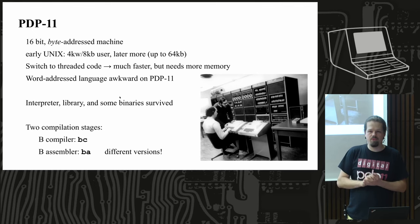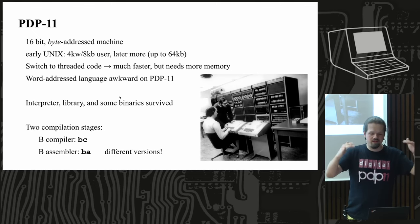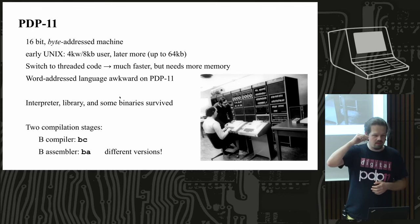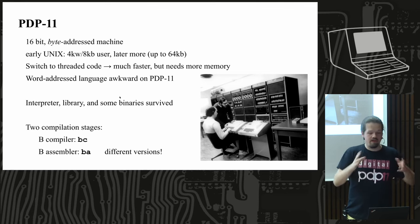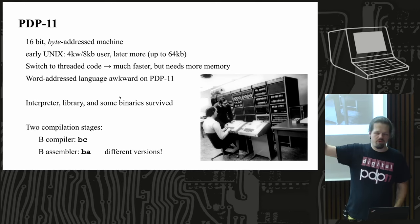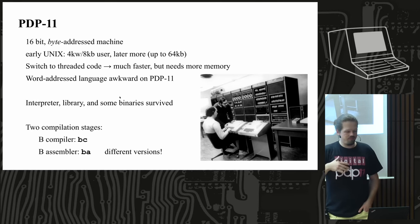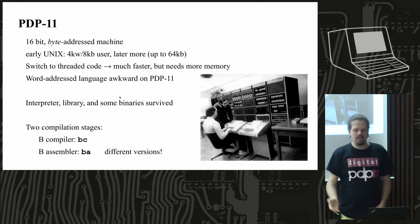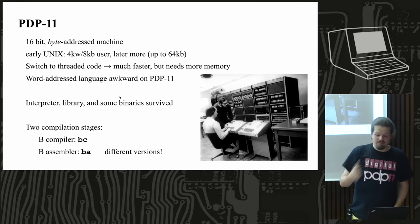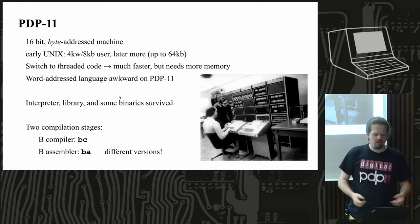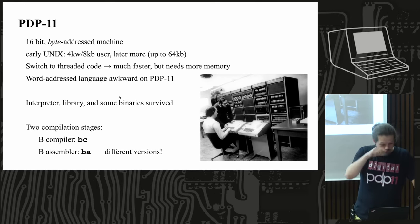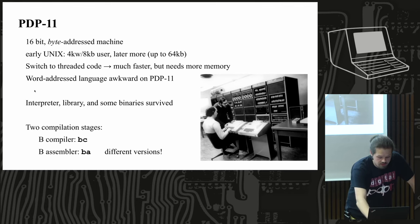The increase in memory made it possible to switch to a different implementation scheme. Instead of interpreting B instructions, the new scheme was threaded code — which some of you may know from Forth — essentially a list of function calls: just addresses of what you execute, so it's a dispatch through a pointer to the add code, the whatever code, and so on. This is the version of the language I focused on because it's more capable and there was quite a lot of material available for it.